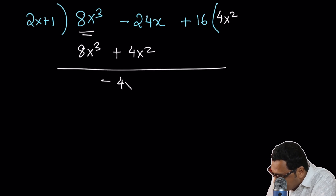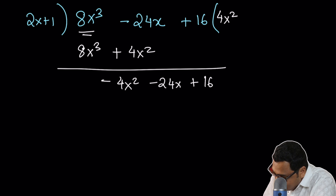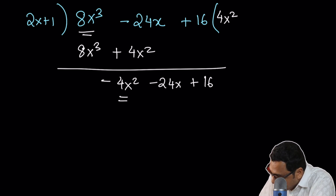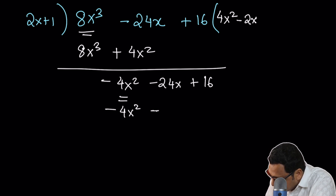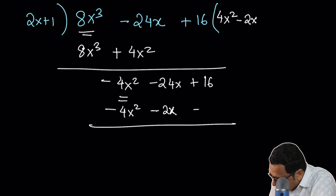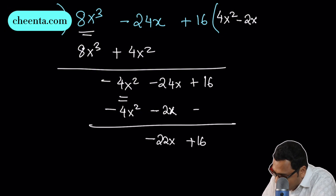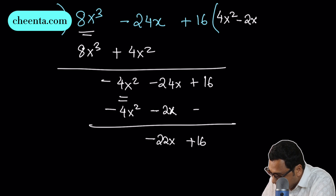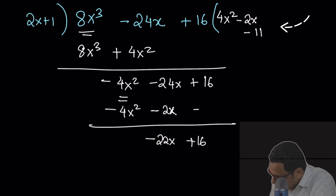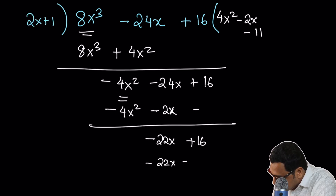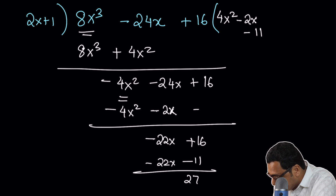Subtracting, we have -4x² - 24x + 16. To get -4x², I multiply by -2x, giving -4x² - 2x. This leaves -22x + 16. Multiplying by -11 gives -22x - 11, so the remainder is 27.